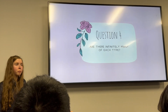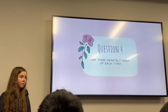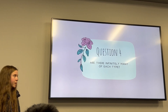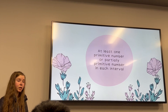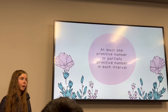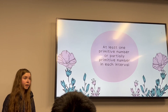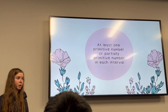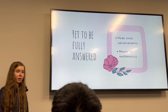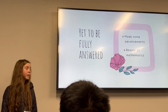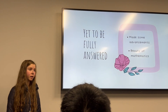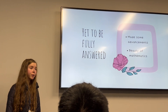Having classified all the primes, we can now broaden the original question of whether there are infinitely many Euclidean primes to ask: are there infinitely many primes of each of the three types? Using Bertrand's postulate, a famous result in number theory, we find that there is at least one primitive number or one partially primitive number in each of our specified intervals. This guarantees that there are infinitely many primitive numbers or infinitely many partially primitive numbers. So our original question has yet to be fully answered; however, we did make some advancements, and the fact that it's still an open question reveals part of why math is so beautiful — for every result we obtain, there are a hundred questions we can ask and explore.